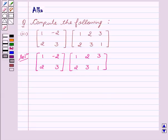Now, the product of the given matrices is equal to 1 into 1, plus minus 2 into 2, 1 into 2, plus minus 2 into 3, 1 into 3, plus minus 2 into 1.